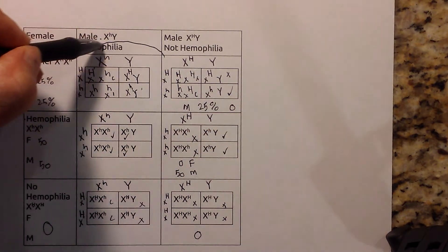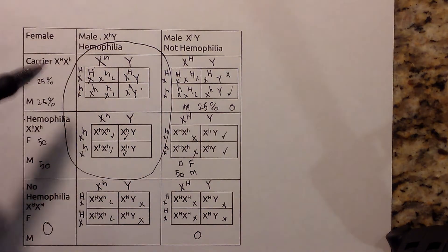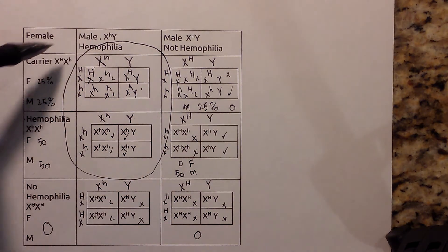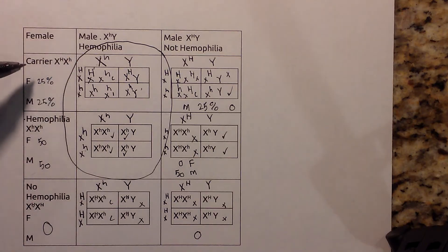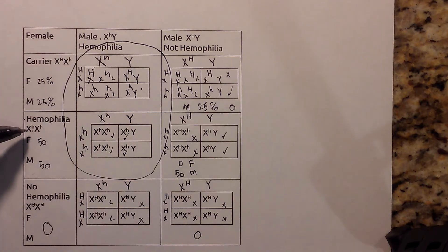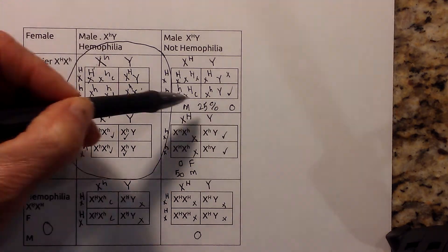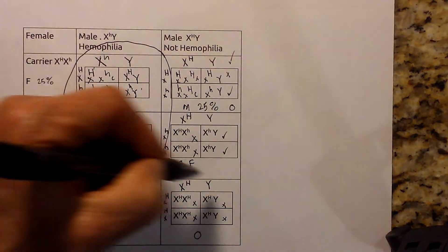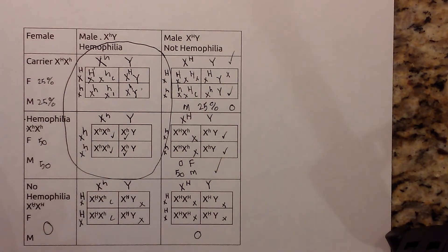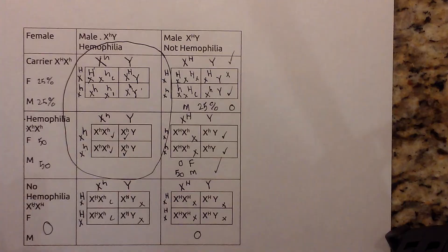So if you look across all the examples, the only two instances where a female can get hemophilia are where the male has it and the female is a carrier, or the male has it and the female has the disease. But males can get it in four of the six scenarios. That's how Punnett squares show why hemophilia is more common in males than females. Thanks for watching — Moomoo Math uploads a new math and science video every day. Please subscribe and share.